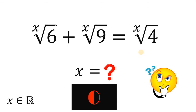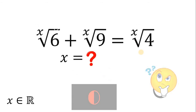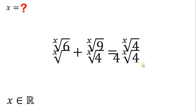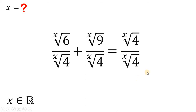Now, let's answer this question together. We have here x root of 6 plus x root of 9 equals x root of 4. I know we have different methods to answer this kind of question, but here's one way to solve it. The first thing to do is to divide all terms by x root of 4. Our goal is to make the right-hand side equal to just 1. x root of 4 over x root of 4 is just 1.